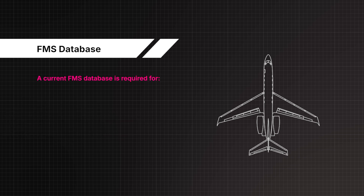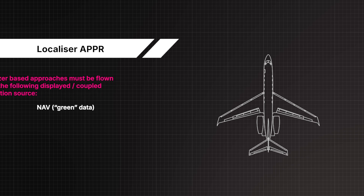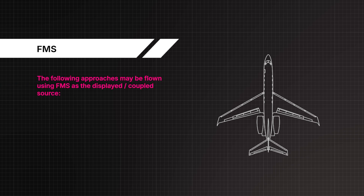A current FMS database is required for all GPS approaches. Localiser-based approaches must be flown using NAV green data as the displayed/coupled navigation source. The following approaches may be flown using the FMS as the displayed coupled source: R-NAV, GPS, VOR, VOR/DME, VOR/DME R-NAV, NDB, and GPS approaches.